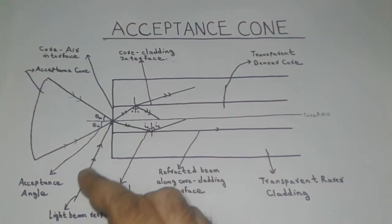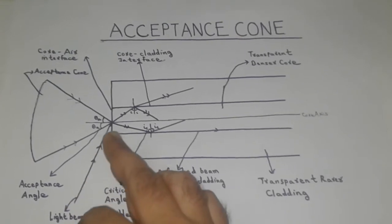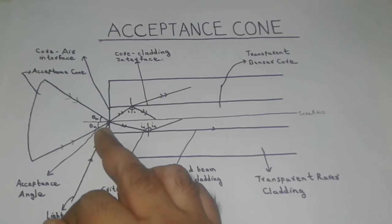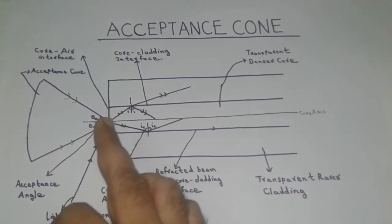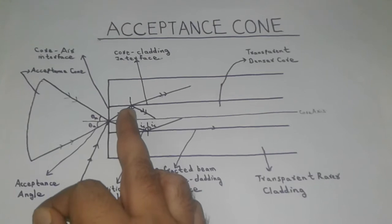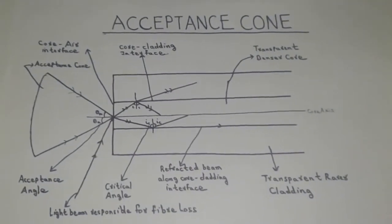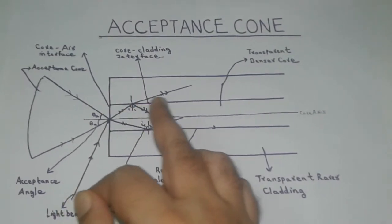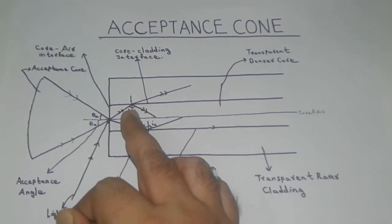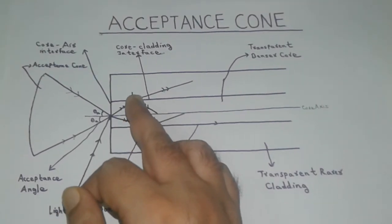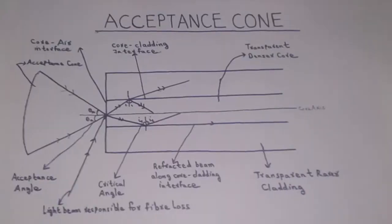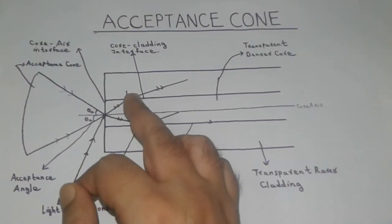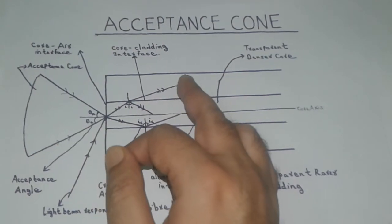On the other hand, when a light beam outside the acceptance cone makes an angle of incidence greater than the acceptance angle, the refracted beam will bend less towards the normal in the denser core. Hence, the refracted beam will be incident at the core-cladding interface at an angle less than the critical angle and will be refracted into the rarer cladding. Hence, all the light beams falling outside the acceptance cone will contribute to the fiber loss.